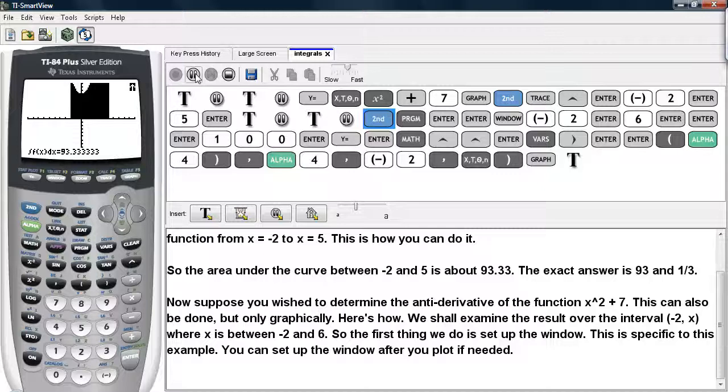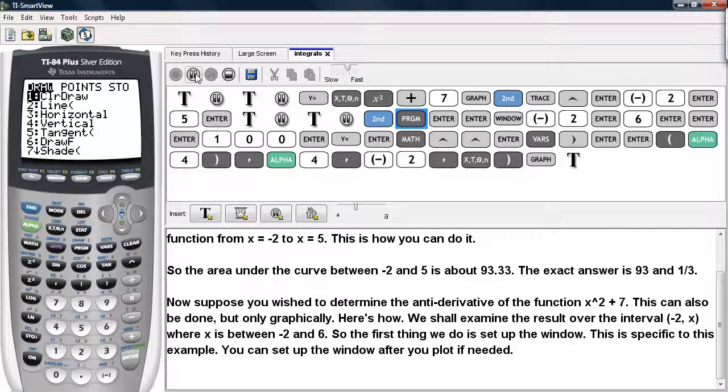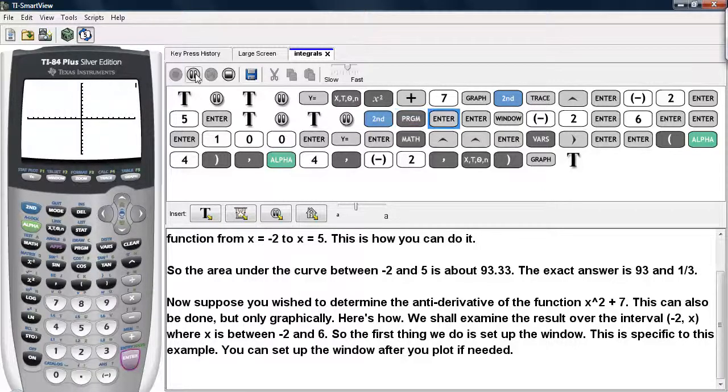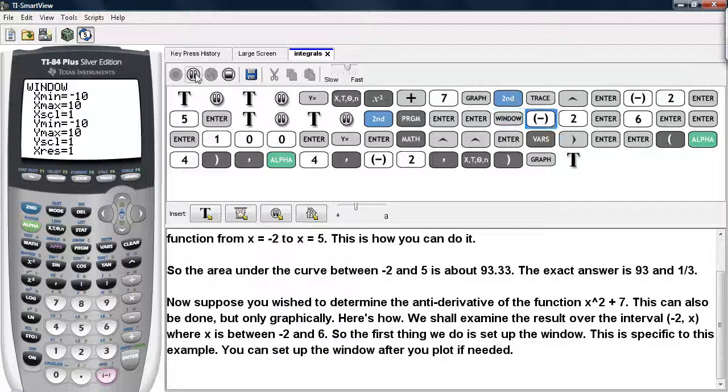So we'll go second and program. We'll go ahead and clear out these drawings. Then we'll go ahead and change up our window to go between negative 2 for x min, and then x max will be 6.